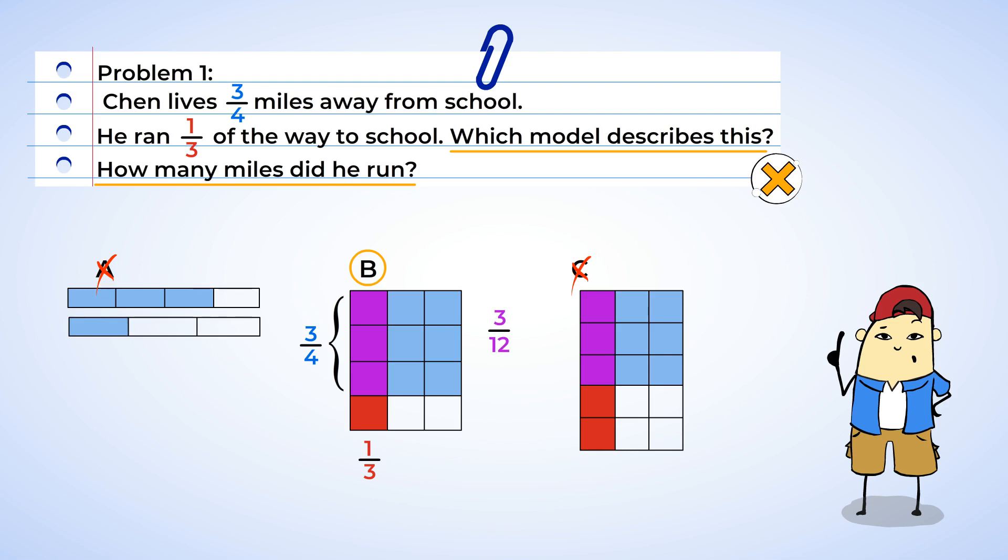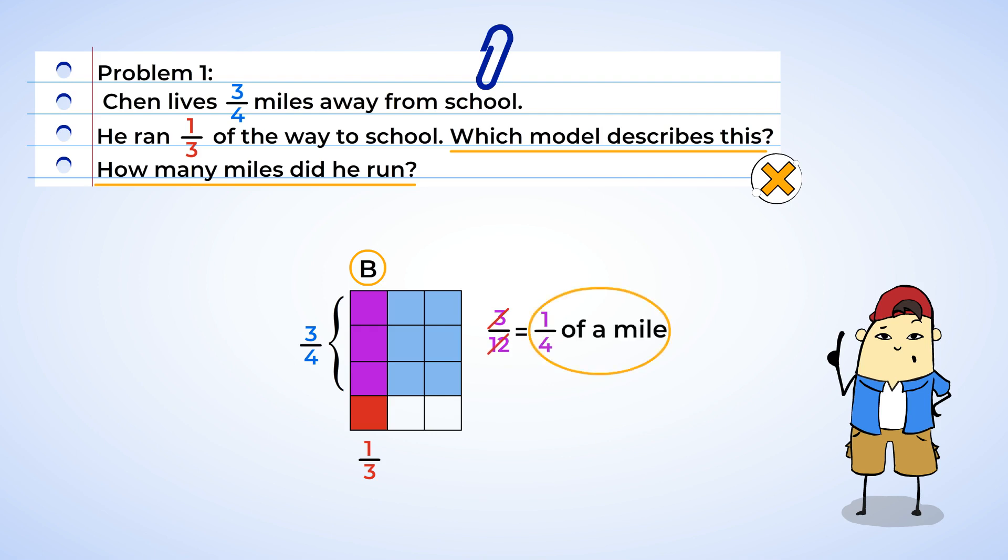But hang on, Chen, we can simplify the answer. Our numerator and denominator are both multiples of three. So if we divide three by three, we get one. And 12 divided by three equals four, and that gives us one-fourth. So Chen actually ran a quarter of a mile. Fantastic work! Pretty soon he's going to be running marathons.